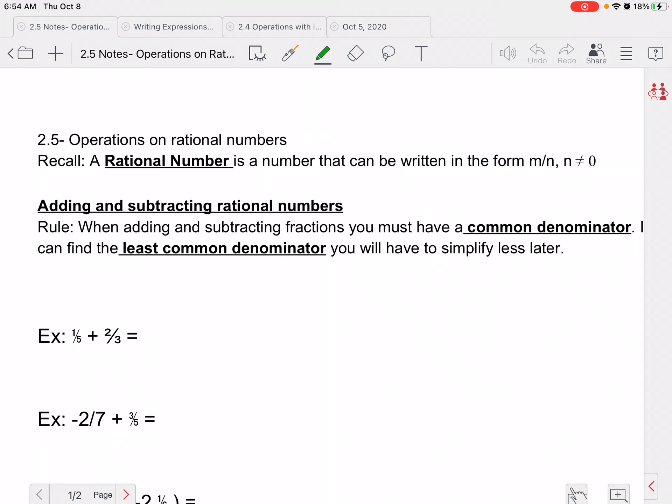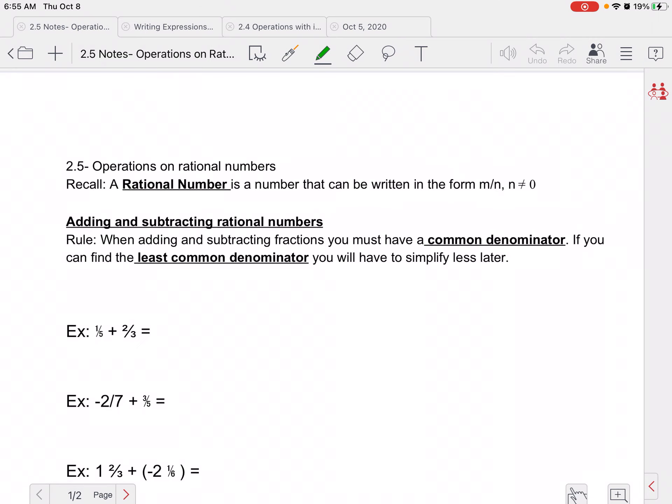So a rational number, remember, is a number that can be written in the form m/n with n not equal to 0. So basically, it's a number that can be written as a fraction. And when we're adding and subtracting rational numbers, we have the same rules as adding and subtracting integers. But when we add or subtract fractions, we need a common denominator. And if we can find the least common denominator, that would make us have to simplify less later.